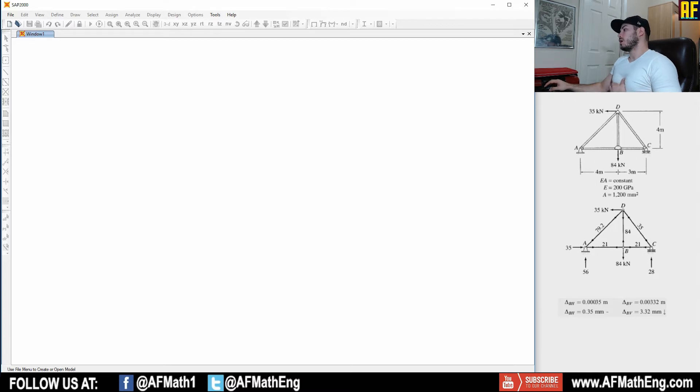So we have a truss here on the right-hand side of the screen. And this is the truss with the loadings. We have two point loadings here, 35 kilonewton at D and 84 kilonewton at B. We're given the modulus of elasticity. We're given the cross-sectional area of the members, and that is essentially it. We're also given the solved truss with the reactions, we have the forces in the members, and we have the deflection at B. So I'm going to show you how to get all of those things really quickly in SAP 2000.